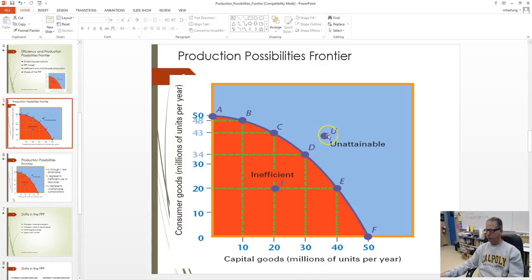Point U is unattainable because there's not enough resources to produce at that level. The I represents an inefficient region of production because you could produce here. But if you were to produce 20 million capital goods and 20 million consumer goods, you actually could have produced as much as 43 million consumer goods. This shows you can operate in this zone, but it's inefficient because you could have been operating out here. You're not using your resources as productively and as efficiently as possible.